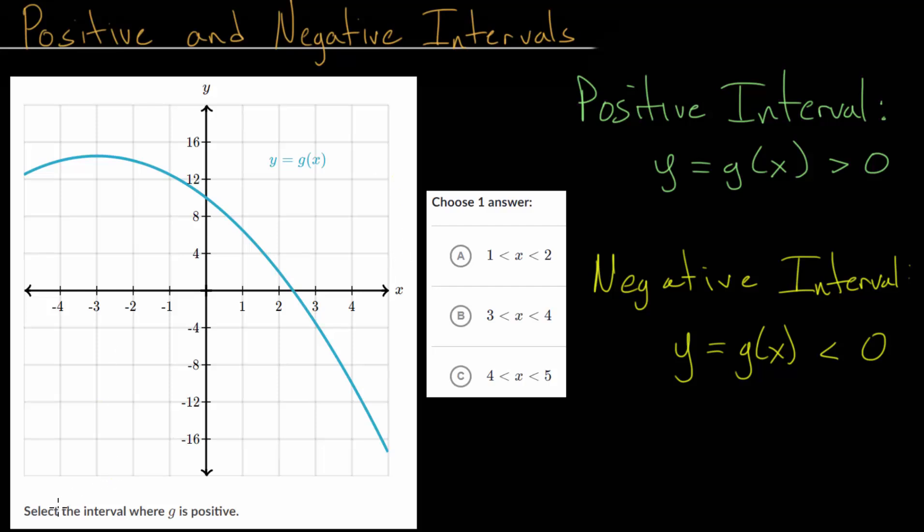For this one, we just need to select the interval where g is positive. For these exercises on Khan Academy, you're going to have multiple choice, since a lot of times it's difficult to determine exactly where the cutoff is. This is our cutoff point when the y value is zero. So let me mark that in. Any point on the blue curve that has a higher y value than this would be part of our positive interval.